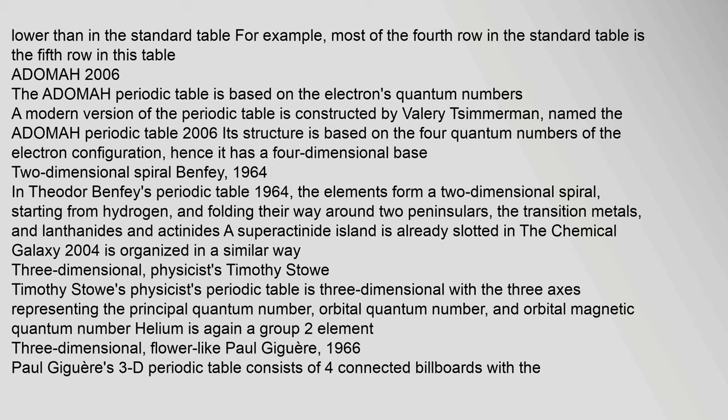Three-dimensional, physicists: Timothy Stowe's physicist's periodic table is three-dimensional, with the three axes representing the principal quantum number, orbital quantum number, and orbital magnetic quantum number. Helium is again a group-two element.